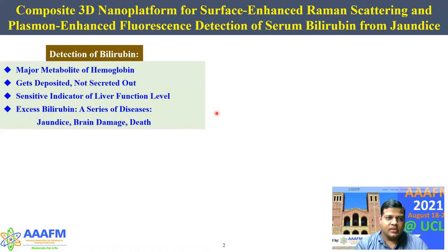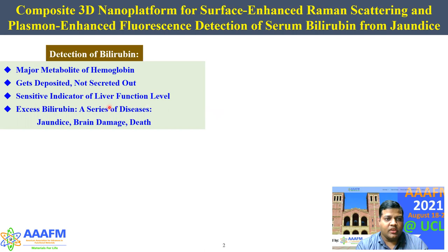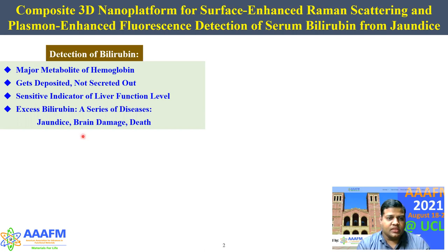Bilirubin is an endogenous pathological substance present in human blood, which is a major metabolite of hemoglobin. It gets deposited in the human bloodstream and not secreted out, and the presence of excess bilirubin in human blood can lead to a series of diseases which can be liver-related and can also create neurological disorders, which can cause brain damage and even death.